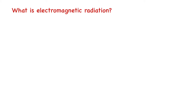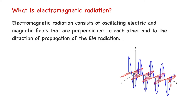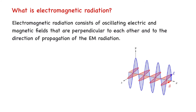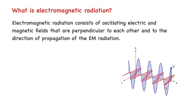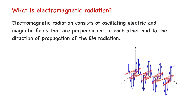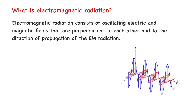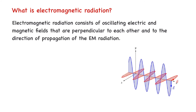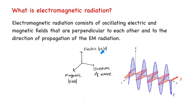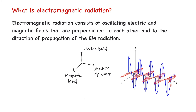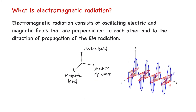First, let us discuss what an electromagnetic radiation is. Electromagnetic radiation consists of oscillating electric and magnetic fields that are perpendicular to each other and to the direction of propagation of the electromagnetic wave. So in an electromagnetic radiation, the electric field, magnetic field, and the direction of propagation are always mutually perpendicular to each other.